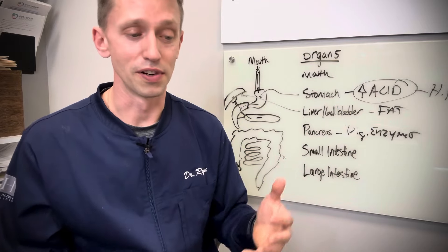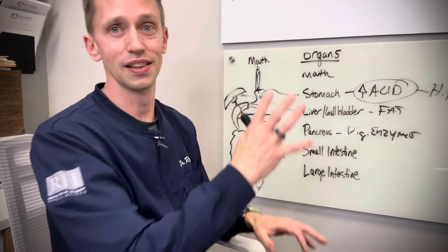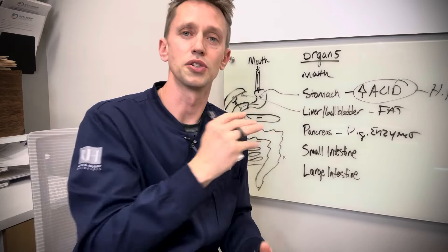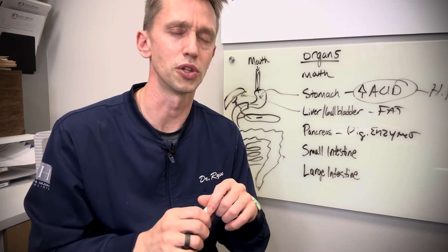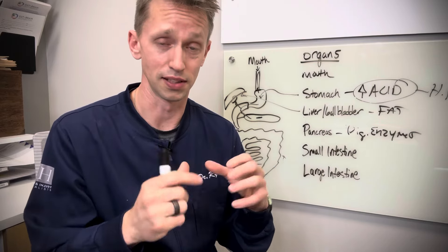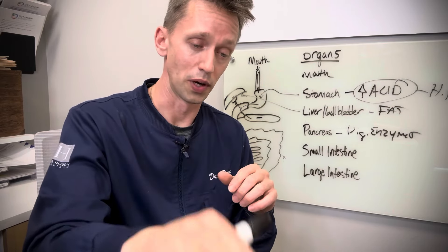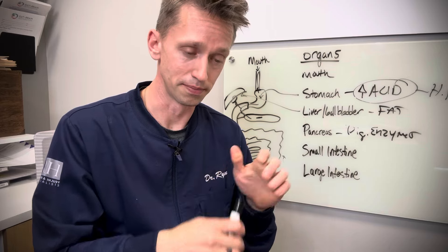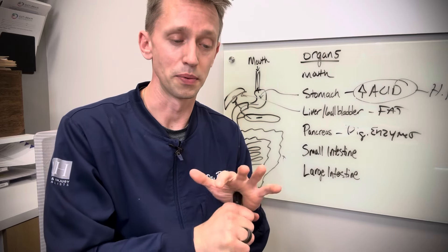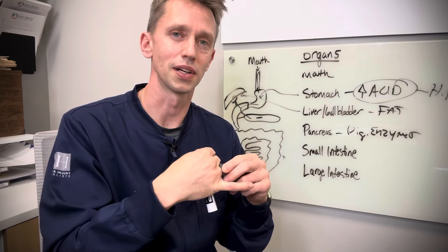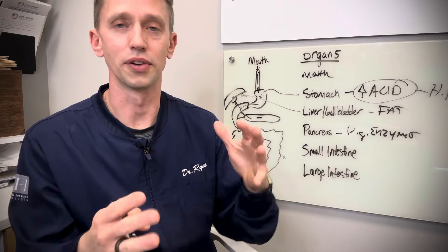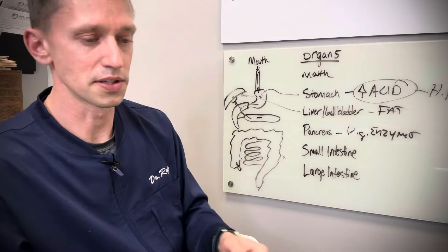Parasites are very common. They have teeth. They're latched on here so they don't like to come out. Commonly on the poop test, the GI map test, we don't even see them because they don't like to come out. One thing I will tell you is that we won't rely on a GI map to tell us if you have a parasite. We're going to actually look at other digestive markers as well to figure out if you have a parasite.